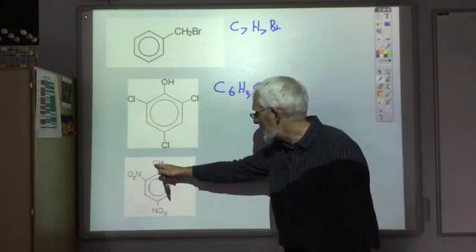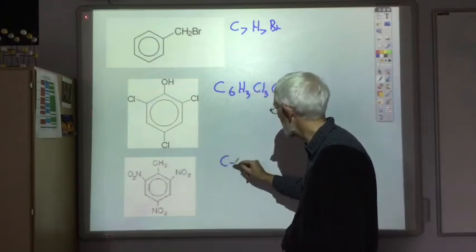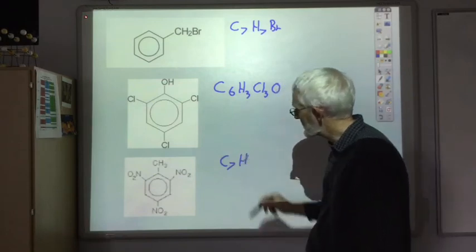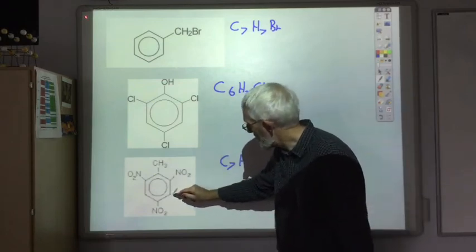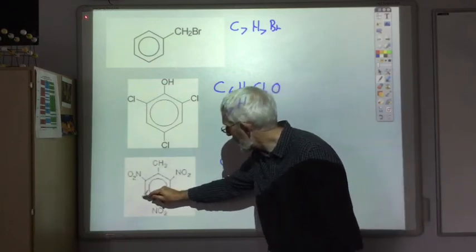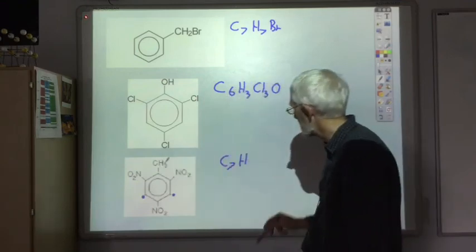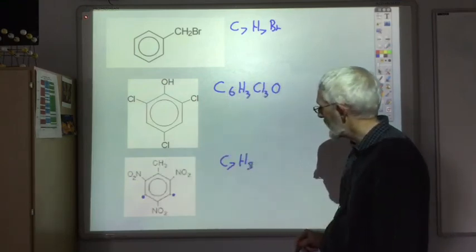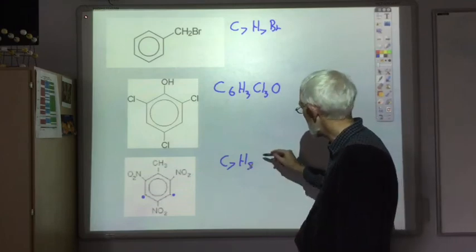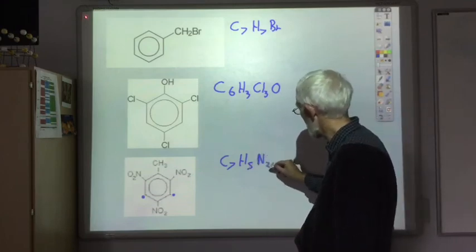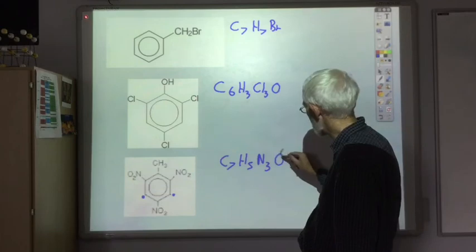And the last one, we've got the six carbons in the ring and one there, so C7. Hydrogens: one there, one there and three there, so that's five. We've got three nitrogens and six oxygens.